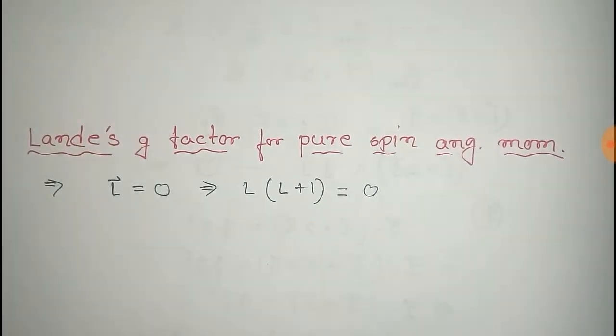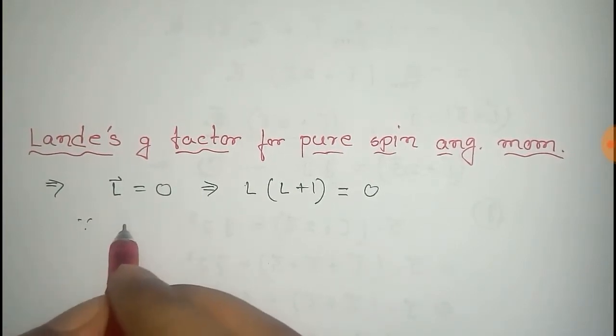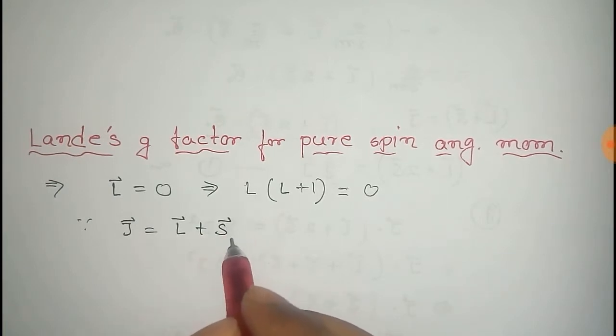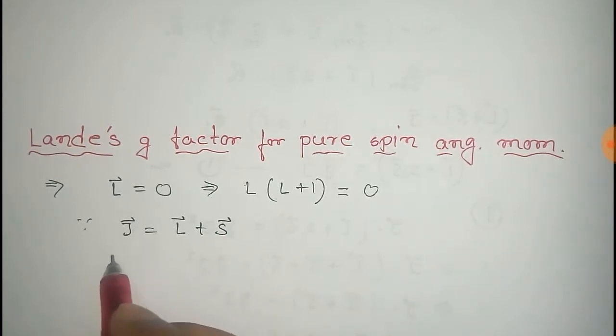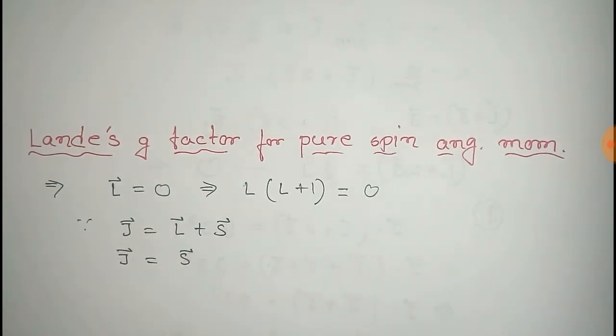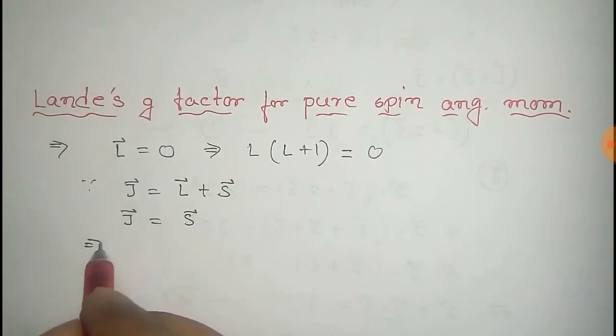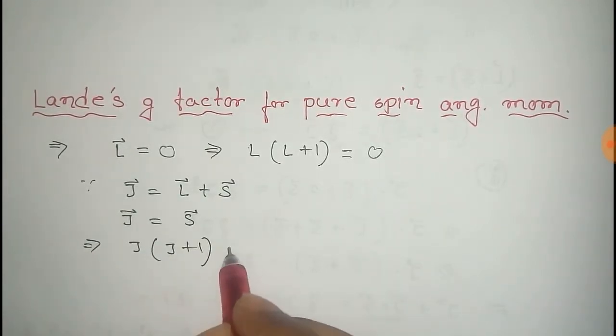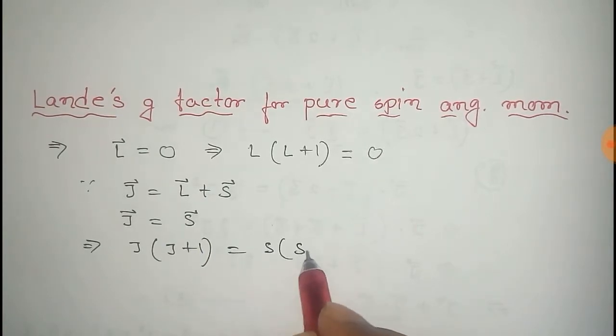Since we know that J vector equals to L vector plus S vector, and here L vector equals to 0, we get J vector equals to S vector. And their average value J into J plus 1 equals to S into S plus 1.